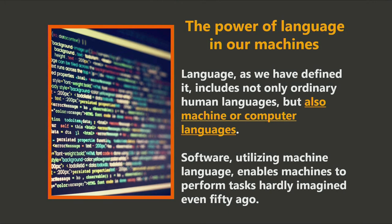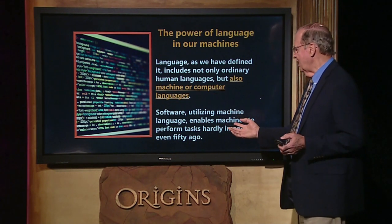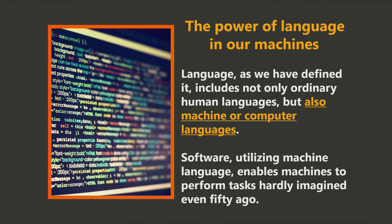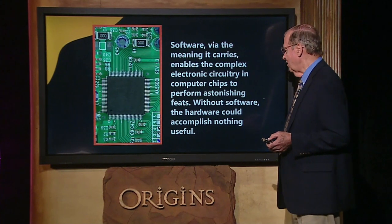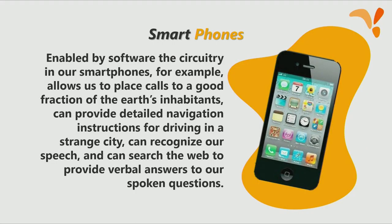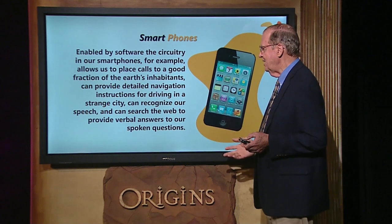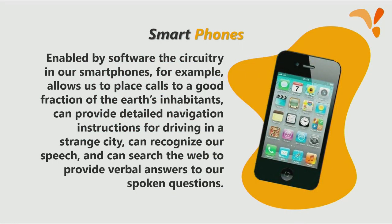The same applies to the language our machines use today. Software utilizing machine language enables machines to perform tasks hardly even imagined 50 years ago. By the meaning it carries, software enables complex electronic circuitry and computer chips to perform astonishing feats — without the software, the hardware could accomplish nothing useful. Enabled by software, the circuitry of our smartphones enables us to place calls to a good fraction of the world's inhabitants, provide detailed navigation in a strange city, recognize our speech, and search the web to provide verbal answers to spoken questions.